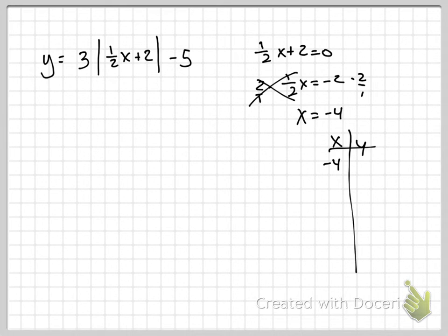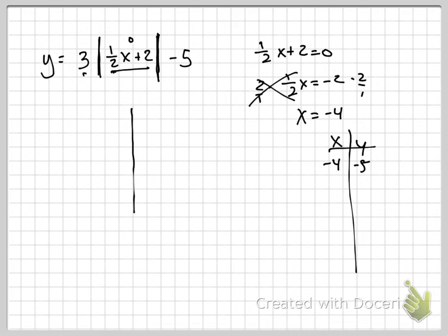When I plug in negative 4, the inside gives 0 — because I set it equal to zero. Absolute value of 0 is 0, times 3 is 0, subtract 5 gives negative 5. So the vertex is (-4, -5). Now pick an x value on each side of the vertex. I wouldn't use negative 5 and negative 3 because half of odd numbers gives a decimal. Instead use negative 6 and negative 2 for nice numbers.